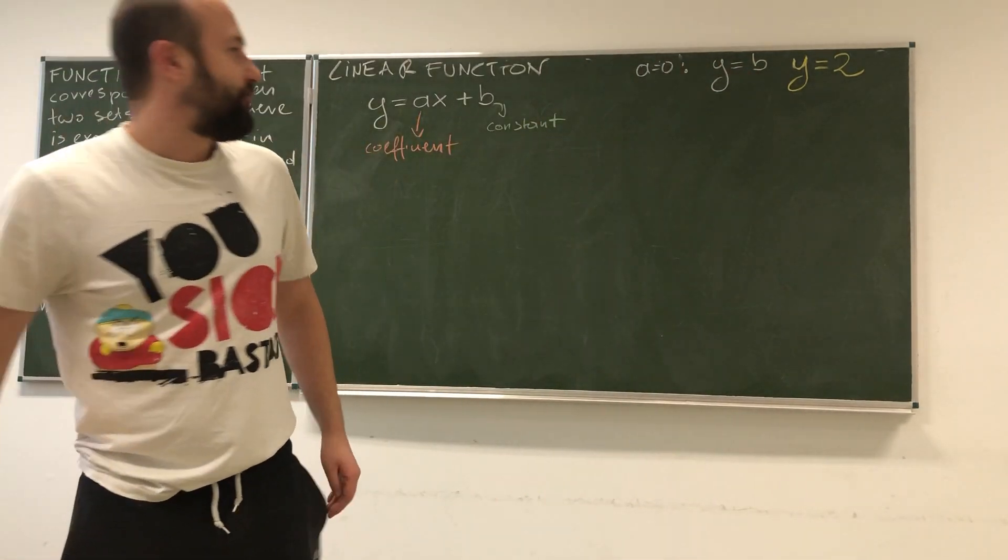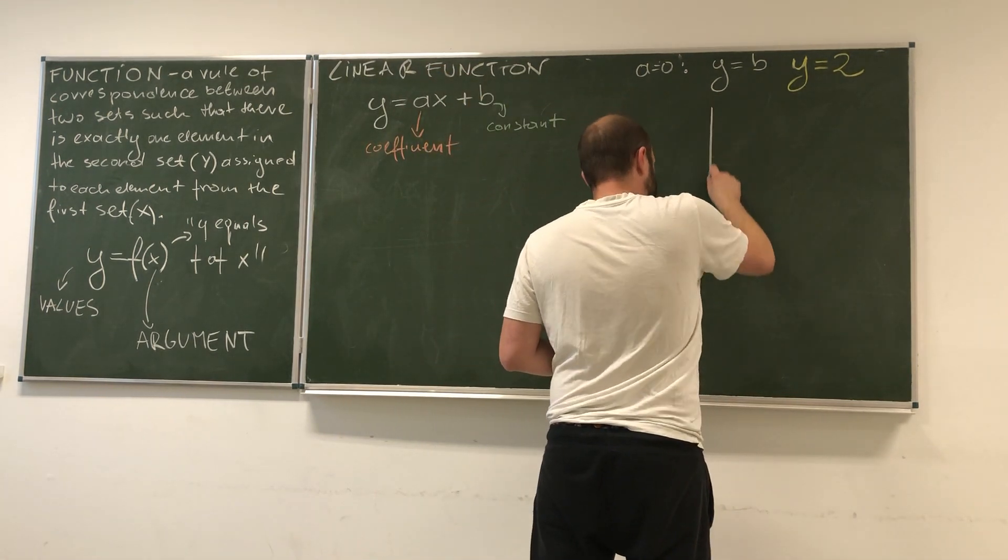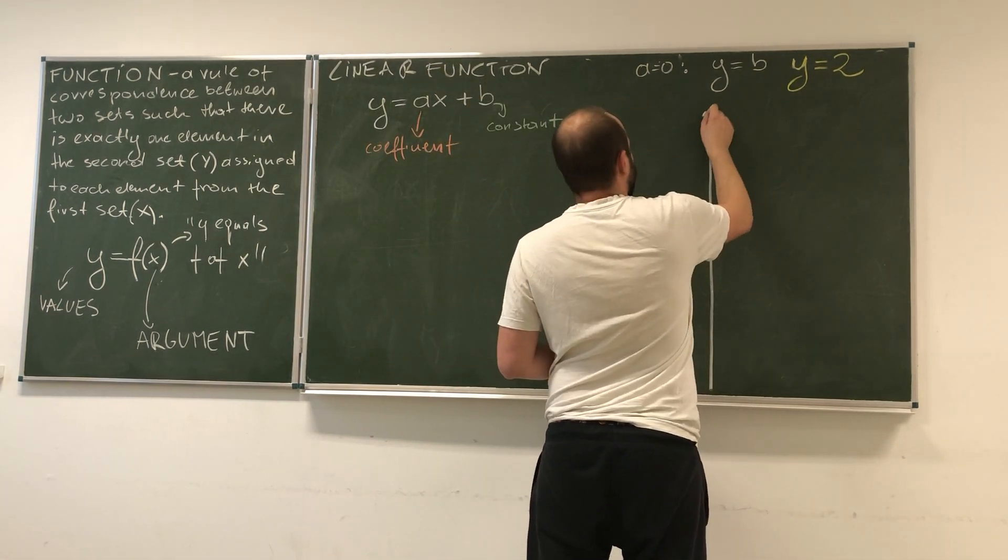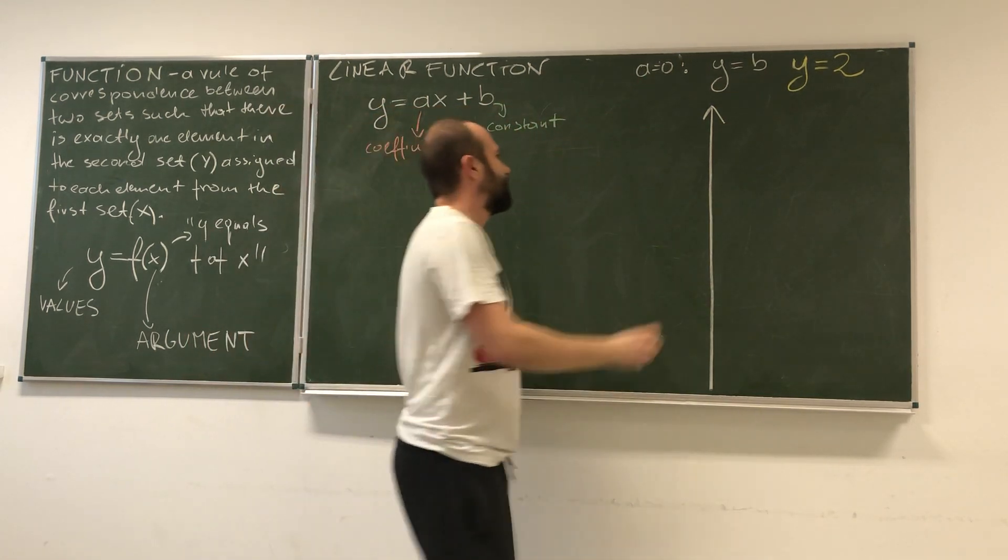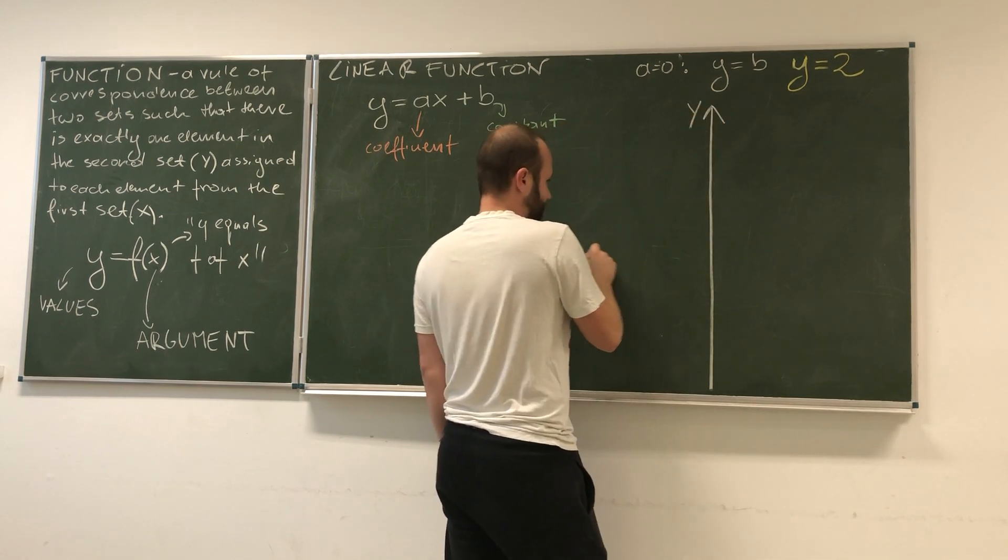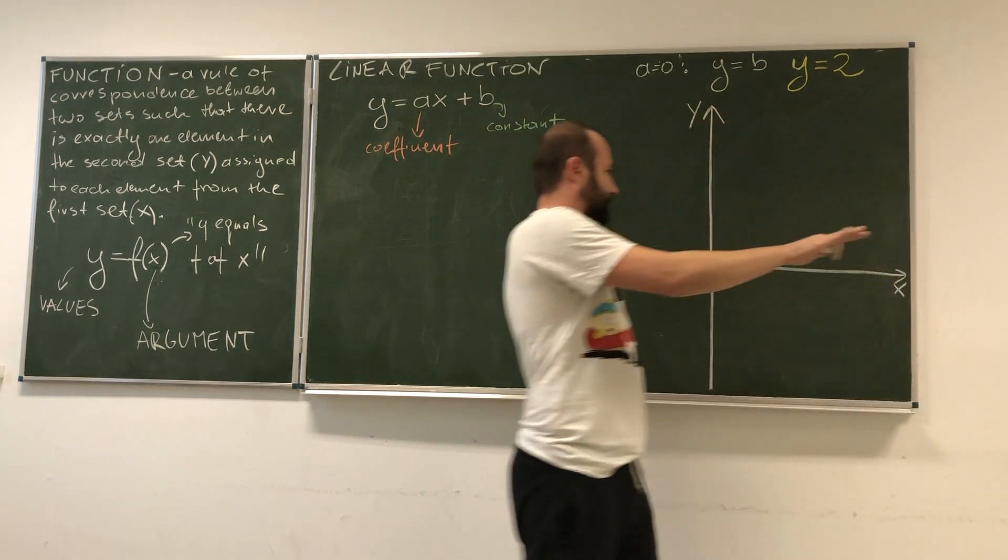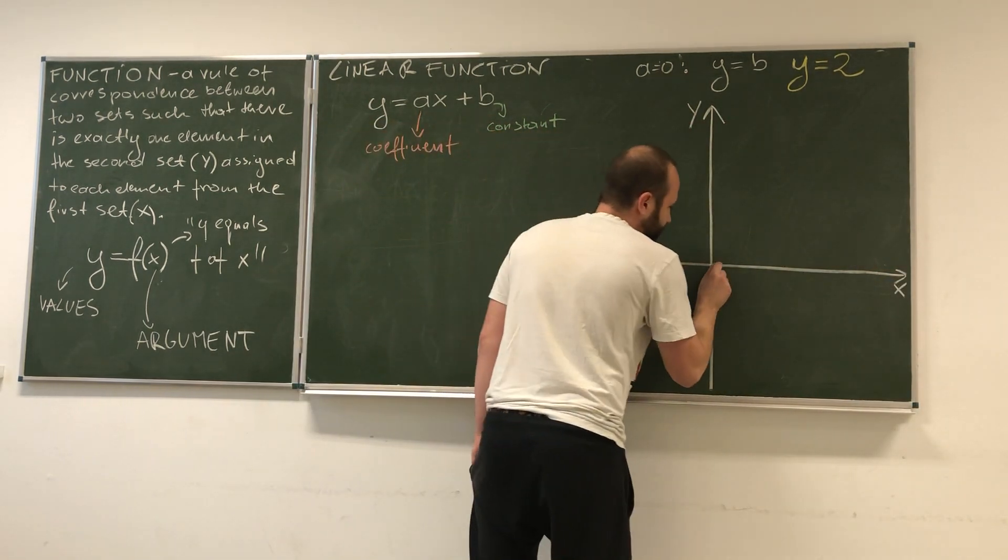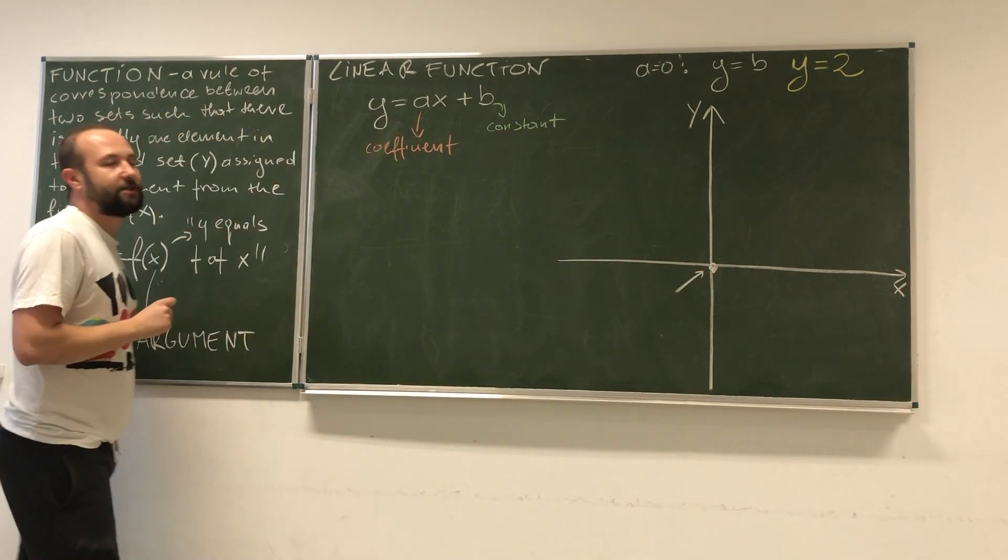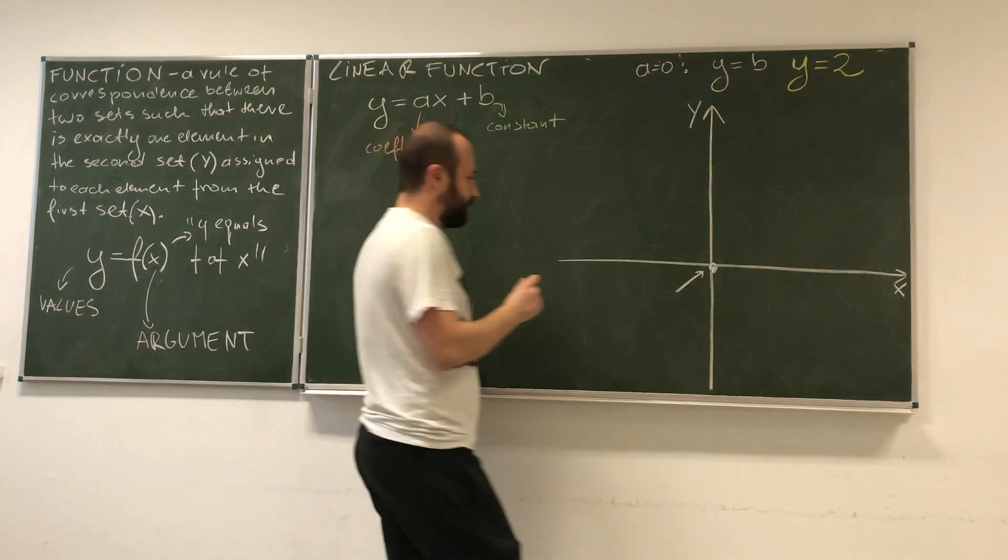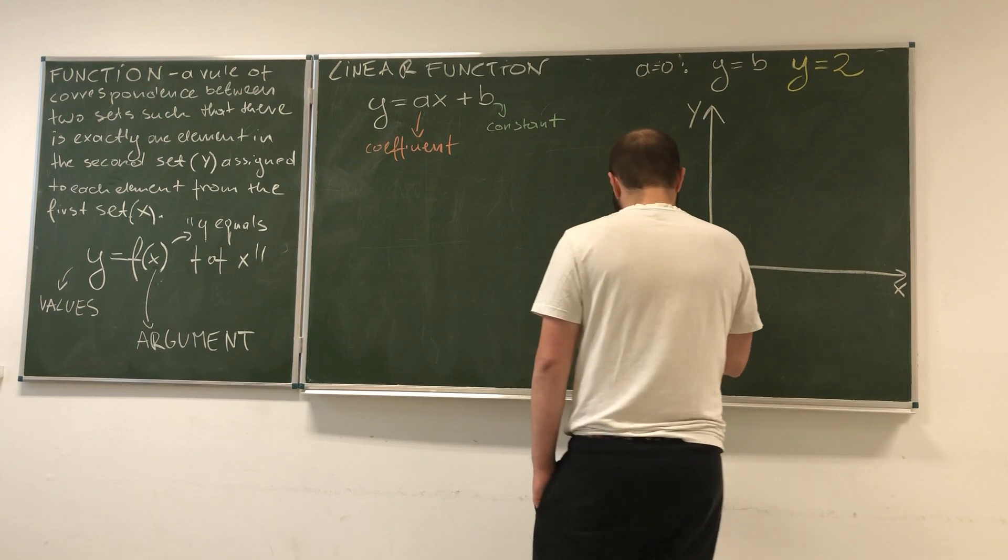Each function we draw in Cartesian coordinate space. Here we have the vertical or y axis, and here we have the horizontal or x axis. At this point, the value of both x and y equals 0. We call this point the origin.